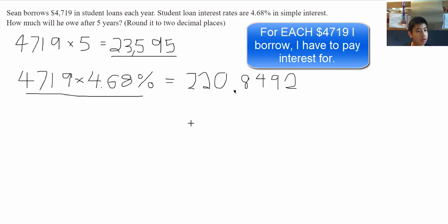So, applying this same concept, we will do it for the second year. Sean will pay 2 times that amount, which is 2 times $4,719. And that will be multiplied by our same rate, which is 4.68%.